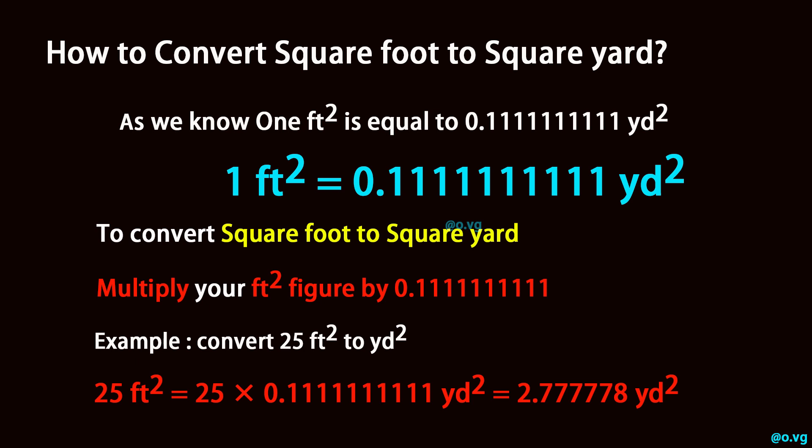Convert 25 square foot to square yard. 25 square foot is equal to 25 times 0.111111111 square yard, which equals 2.777778 square yard.